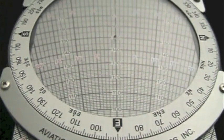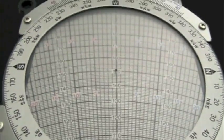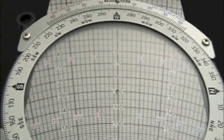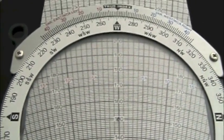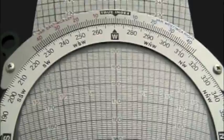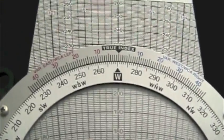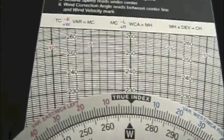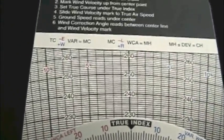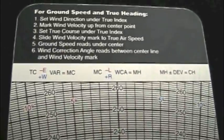Let's look at the wind side of the E6B flight computer to first find our true heading and ultimately determine the magnetic heading required for this trip. Instructions for finding true heading are conveniently located at the top of the slide.